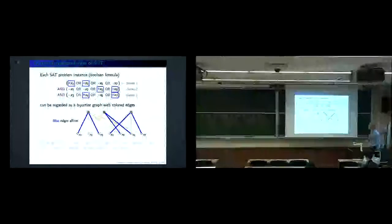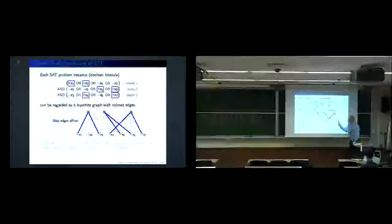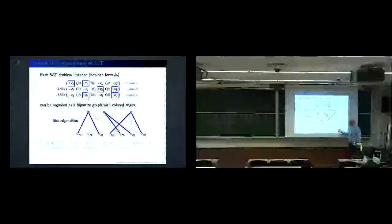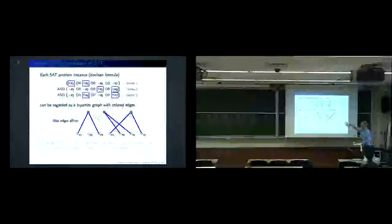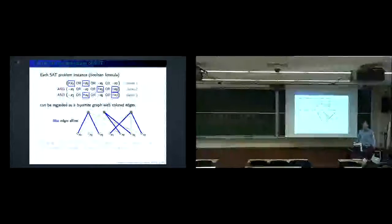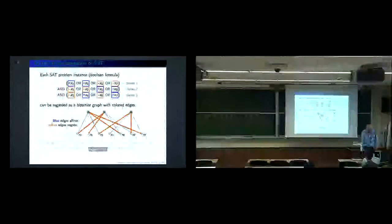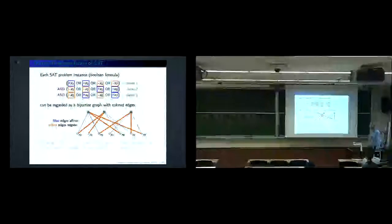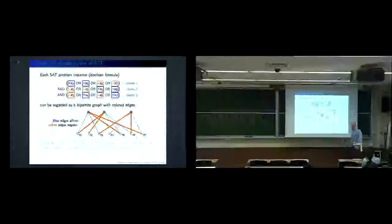This is the same graphical representation as for the Ising spin model, where dashed and solid lines denote J equal to plus 1 and minus 1 respectively. Blue edges mean the variable should be plus one to satisfy the clause; yellow edges mean a negated variable. A single blue-edge variable being one is enough to satisfy that clause.